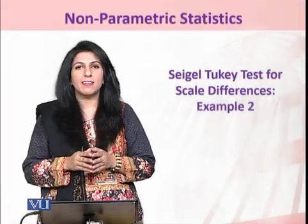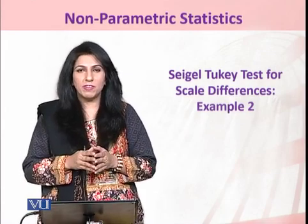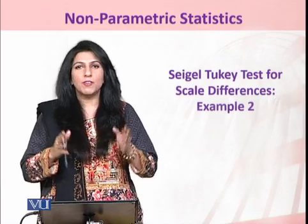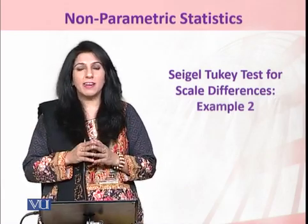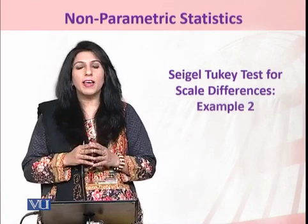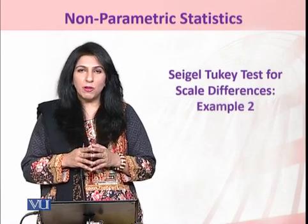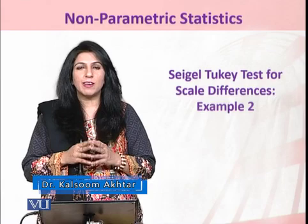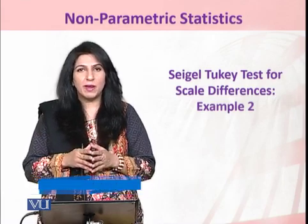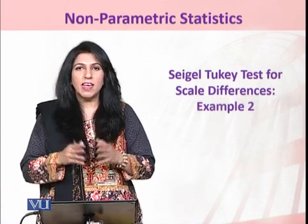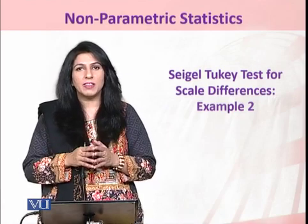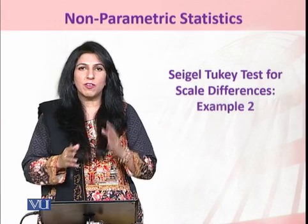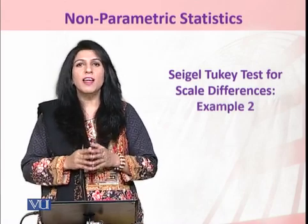The Siegel-Tukey test is used to test the scale differences between two populations. The objective is to verify whether the population variance of the first population is greater than or equal to, lesser than or equal to, or identical to that of the other population variance. This test is required because before testing equality of location parameters, we must first test equality of the two scale parameters — and this is done using the Siegel-Tukey test, provided the two random samples do not follow normality.